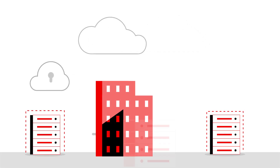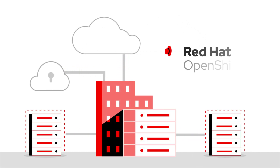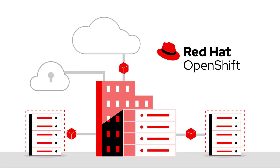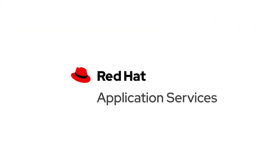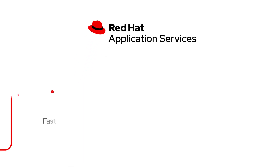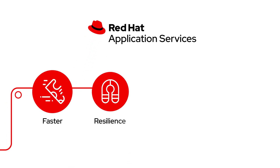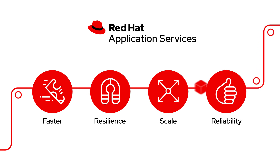With Red Hat application services, you can take advantage of integration on Red Hat OpenShift, a Kubernetes-based container platform that provides a unified and scalable development and delivery experience on any cloud. Red Hat application services can give your business the ability to deliver faster with greater resilience, scale, and reliability than ever before.